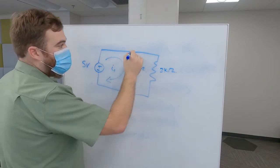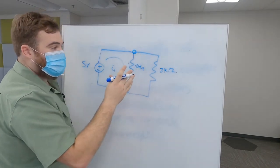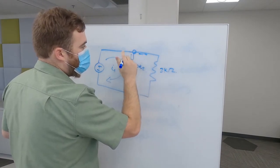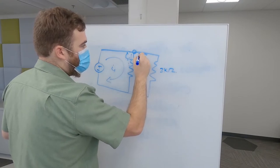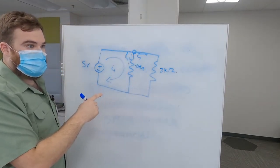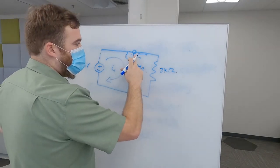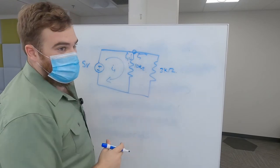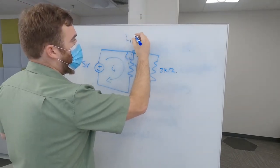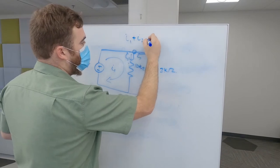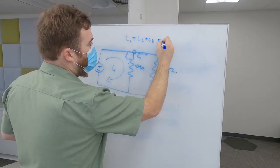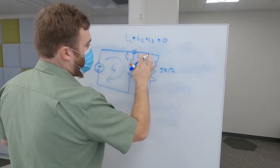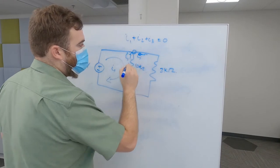We can call this I1. However, at this node, that current is going to be split. We can say this is I2, and this is I3. This is Kirchhoff's current law, is that the current entering a node, the sum of the current entering a node, is zero. So if we have I1 plus I2 plus I3 equals zero. Maybe the current entering a node in that case. So it would be like that.